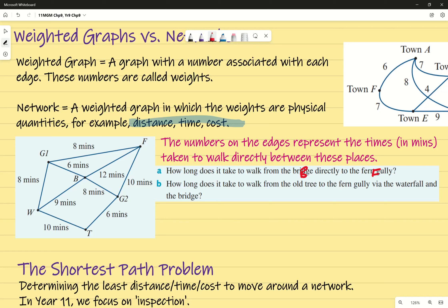So the question is just saying walk directly from B to F. So that's just this path right there. Pretty straightforward. It's going to give me 12 minutes. Happy with that? Easy.